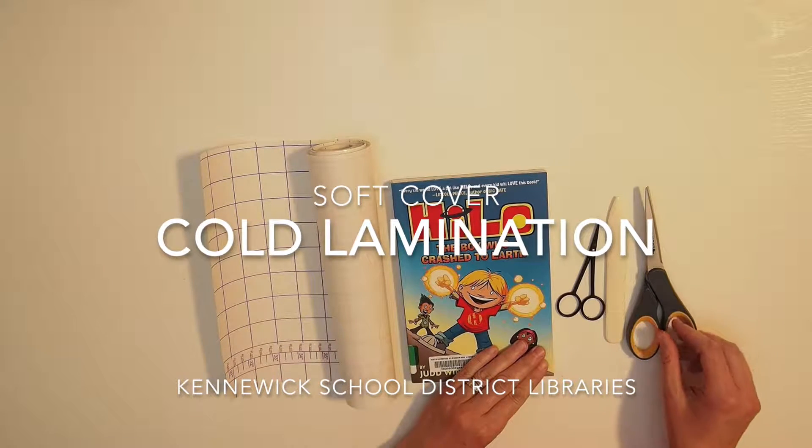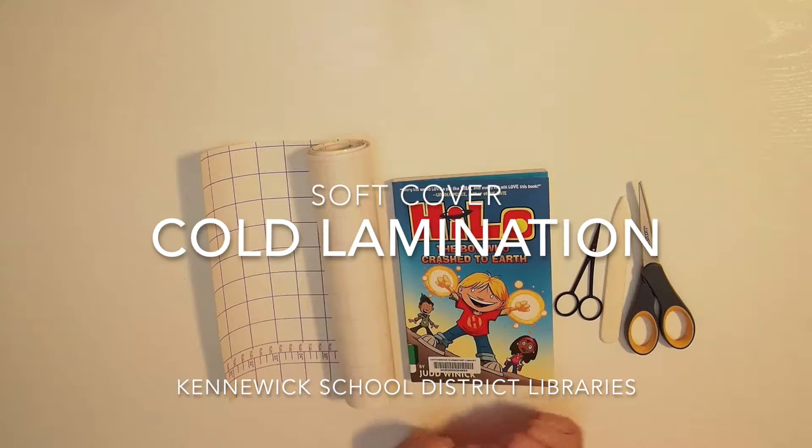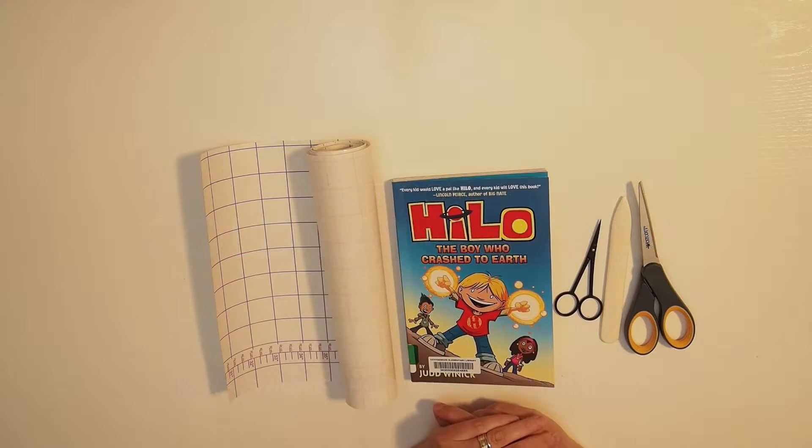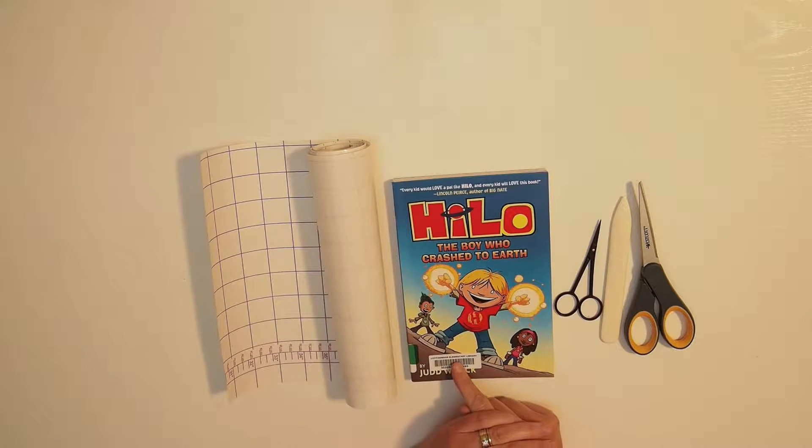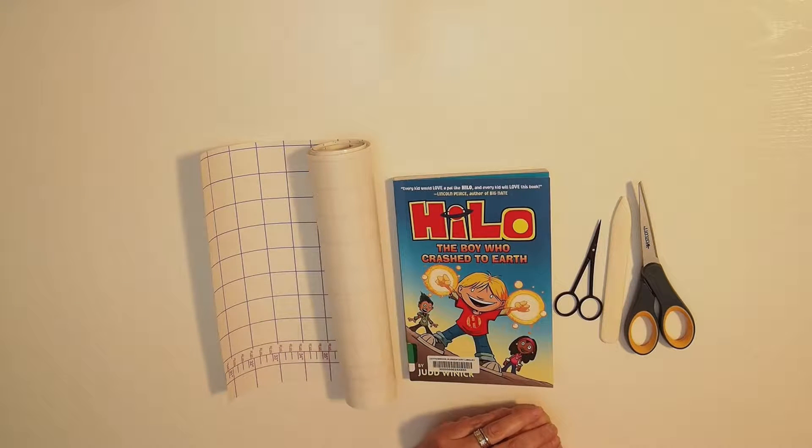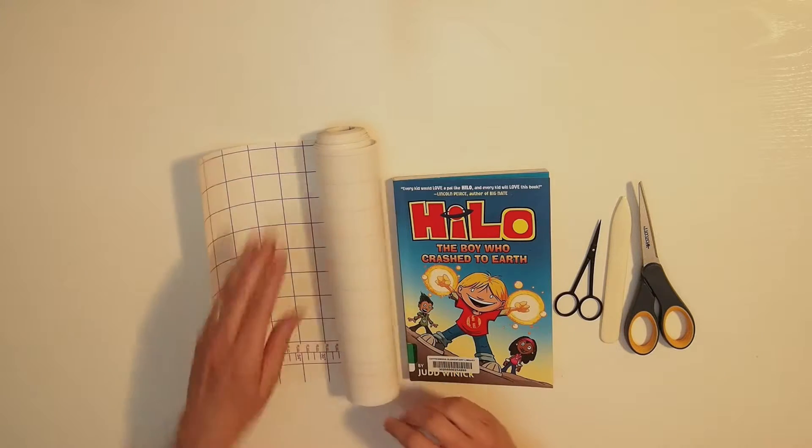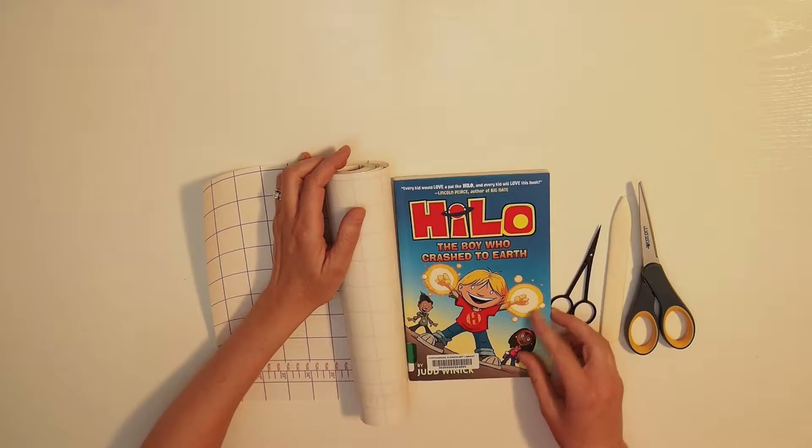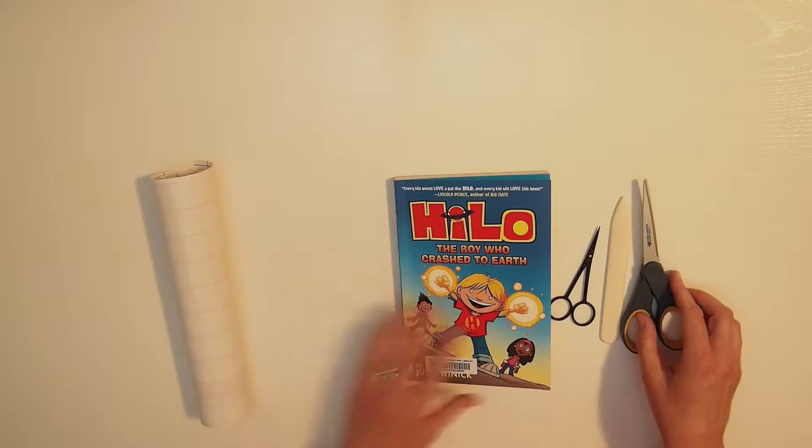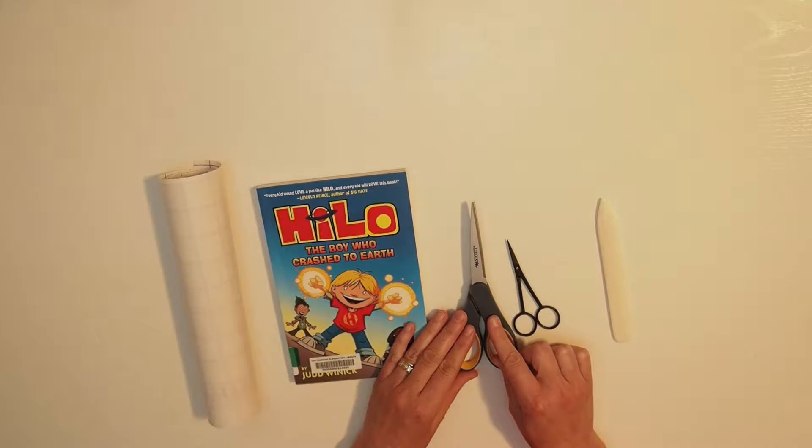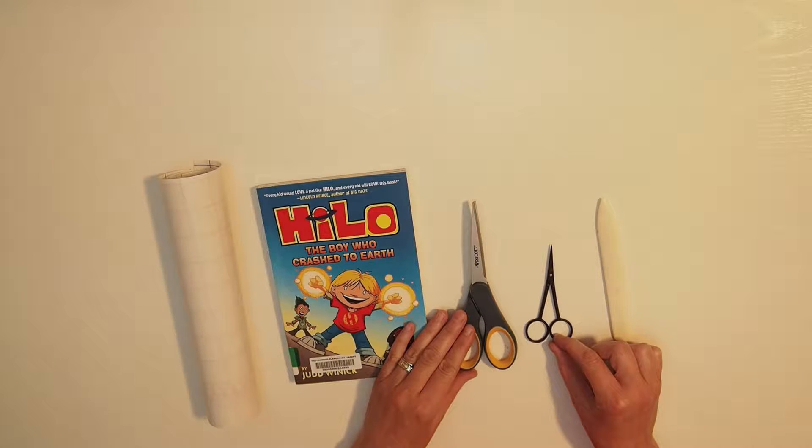Okay, so I am going to go through the process of cold laminating a softcover book the way that we do it at Cottonwood Elementary. These are your basic supplies: a roll of laminate, this is 10 inch for this size book, and you need at least one pair of scissors, a smaller pair for the fine work on the spine is ideal, and a bone folder.